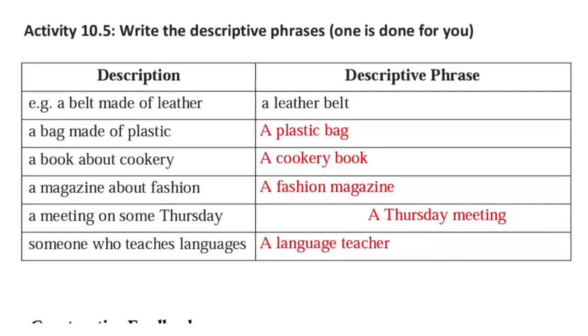Next activity: write the descriptive phrase. One is done for you. A descriptive phrase is a group of two or more words with meaning — it is not a sentence.